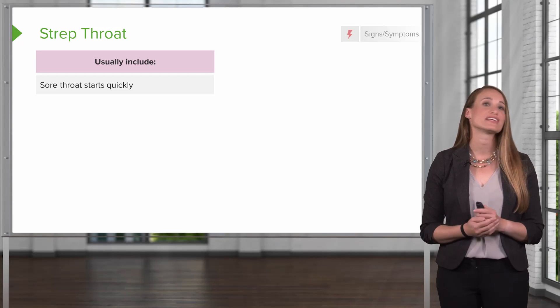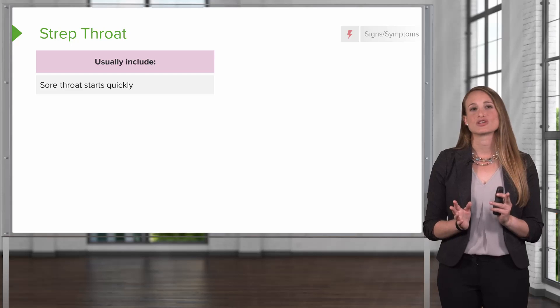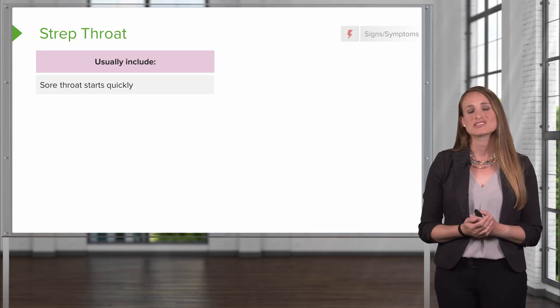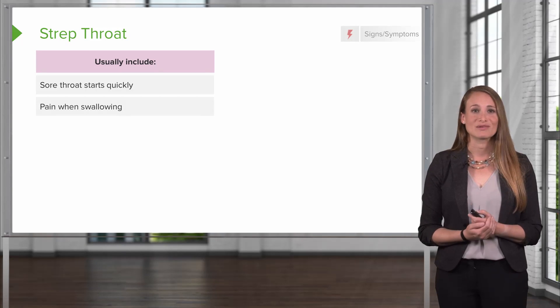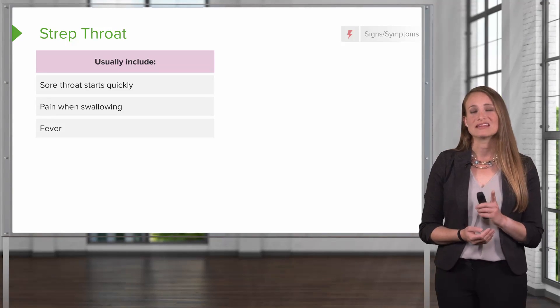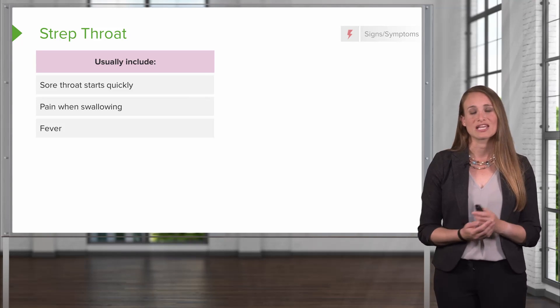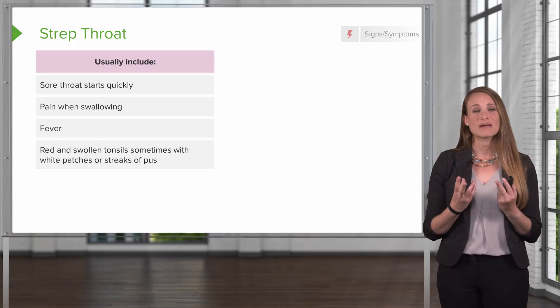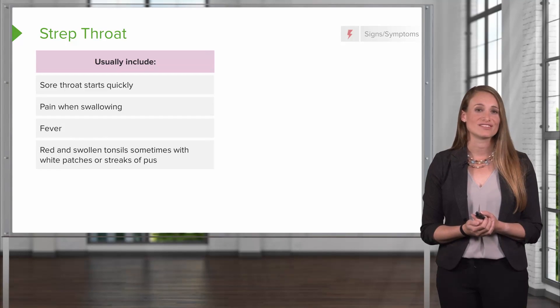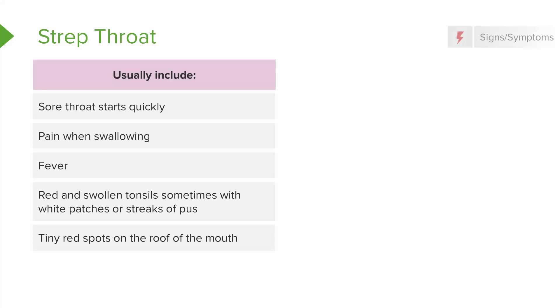Signs and symptoms of strep throat usually include a sore throat that starts rapidly — patients will say they felt fine yesterday and now can barely swallow. They'll have pain when swallowing and usually a fever, unless they're on antipyretics. They will have red and swollen tonsils, sometimes with white patches and streaks — called exudative tonsils — tiny red spots on the roof of the mouth called palatal petechiae, and swollen lymph nodes in the neck at the tonsillar level and anterior cervical lymph node chain.